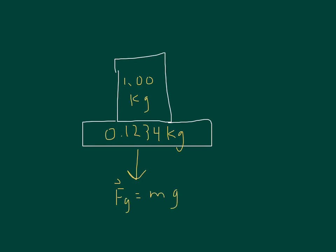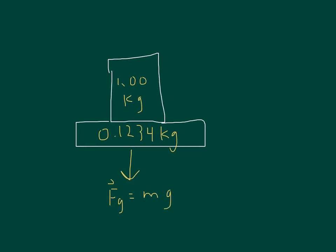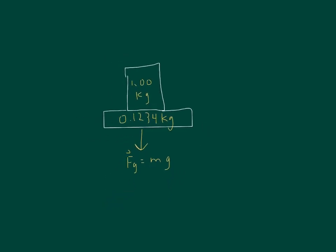So it's 1 plus 0.1234 times 9.8 meters per second squared.